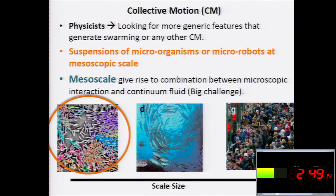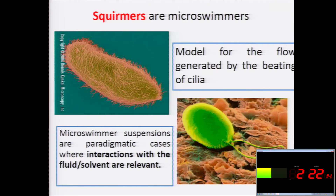In particular, our group is interested in the suspension of microorganisms and micro-robots at the mesoscale. The problem with the mesoscale is that you have the combination between the microscopic interaction between the microorganisms and also the interaction of the organism with the continuum fluid. From a physical point of view, this is a big challenge. To do so, we use a simple model that we call Squirmers, which models how particles or organisms swim in the fluid, and an important question is what happens if you have a suspension of many of them.